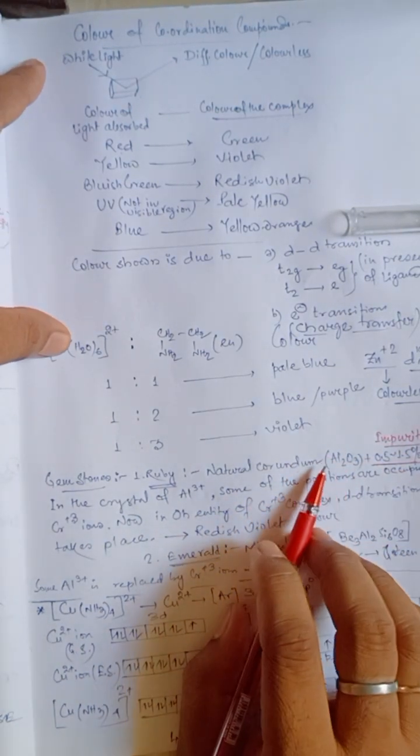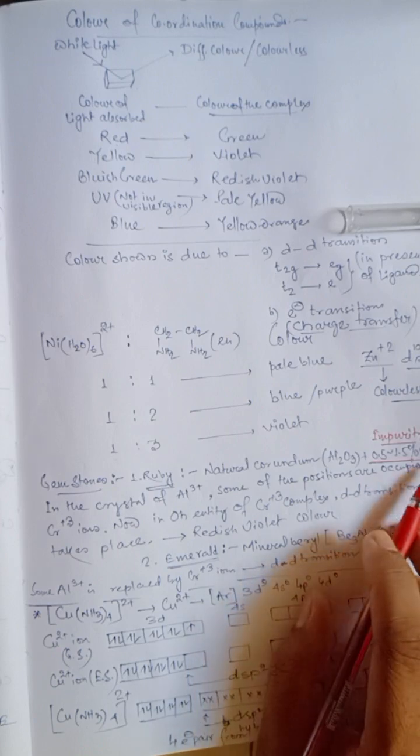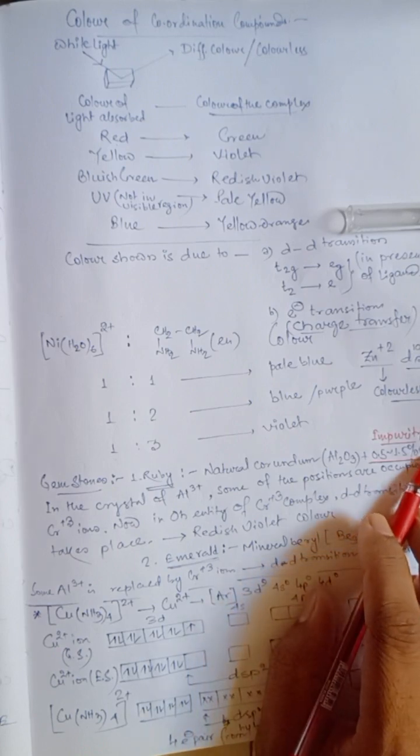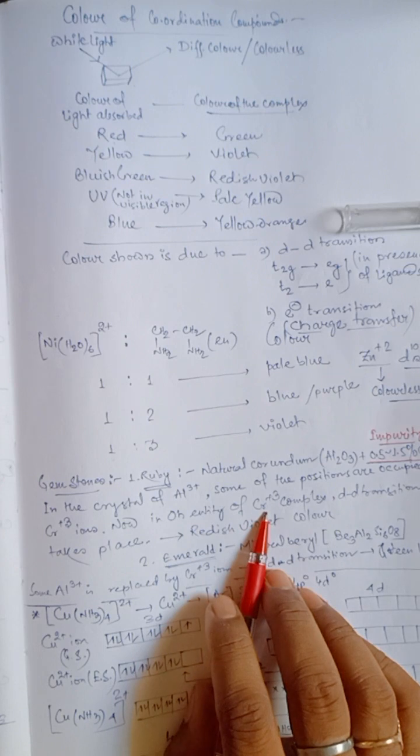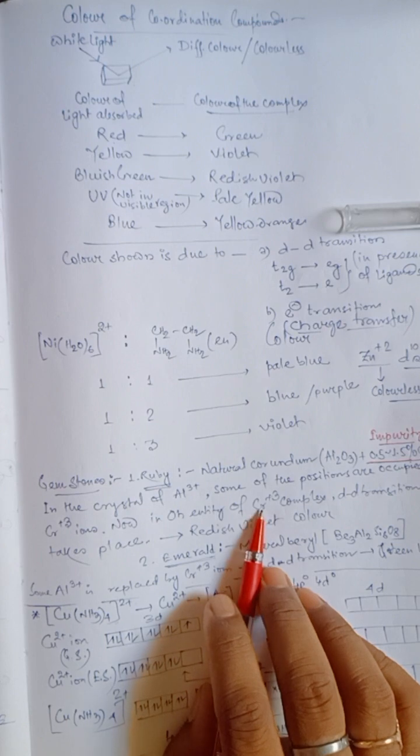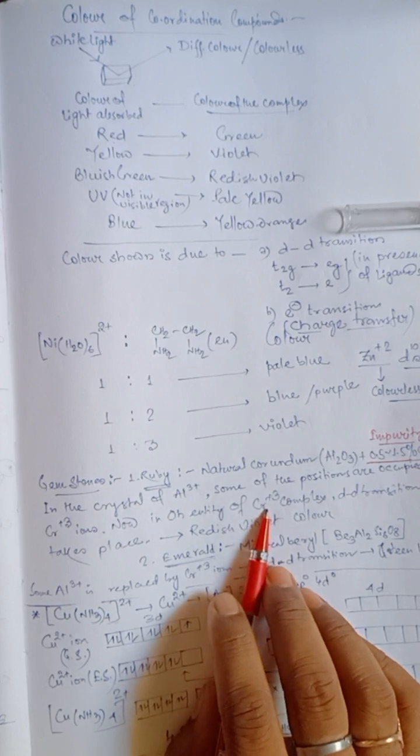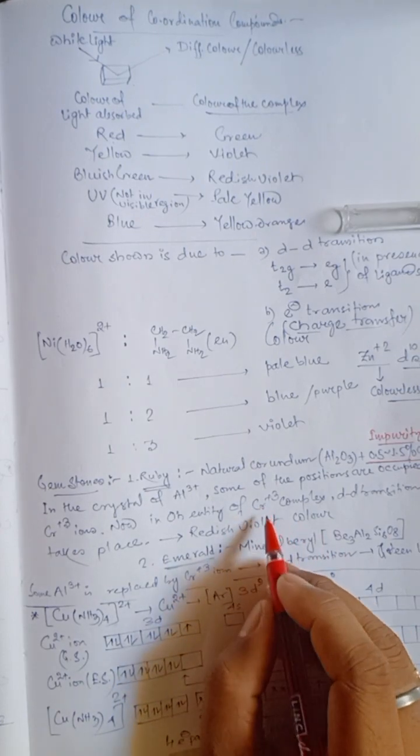And, in the crystal of aluminum 3 plus ion, some of the positional lattice points are occupied by this impurity ion, that is chromium 3 plus ion. So, we can imagine that it is an octahedral entity of chromium 3 plus ion. Now, whenever it is in the atmospheric state or in the atmosphere, the electron from the T2G set to EG set in the octahedral geometry.